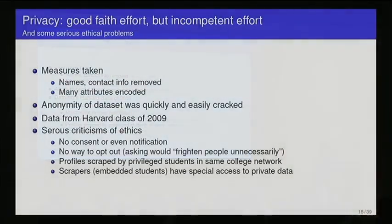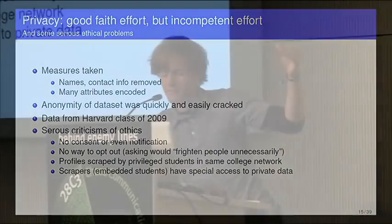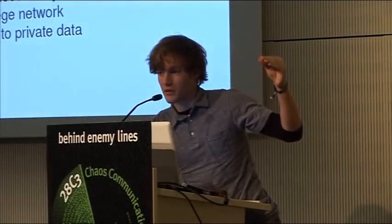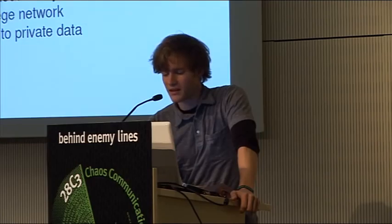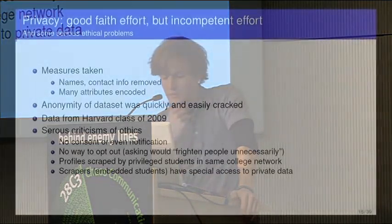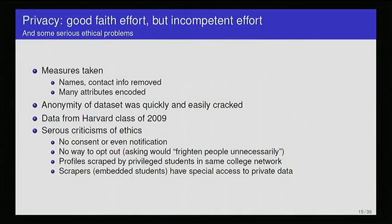There were measures taken to preserve the privacy of the users involved. Their names were removed and contact information was removed. Many attributes, say your favorite band, if one user had a few rare attributes it might be easy to re-identify them. So rather than telling you what the favorite books or bands were, they encoded them with numbers. You would know if two people had a book in common, but you wouldn't know what that book was. Nevertheless, the anonymity of the data set was quickly and easily cracked in the sense that people discovered where the data was coming from. It was from the Harvard class of 2009. So the researchers who were collecting this data were also from Harvard.